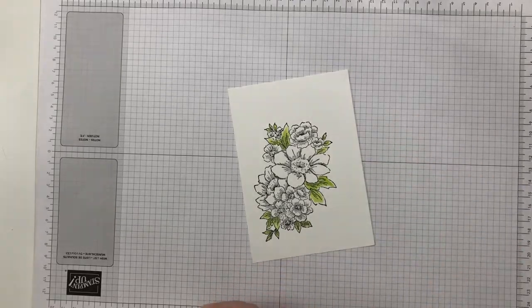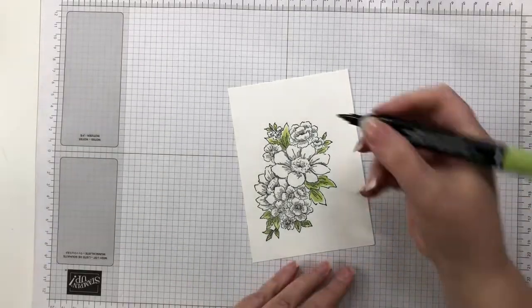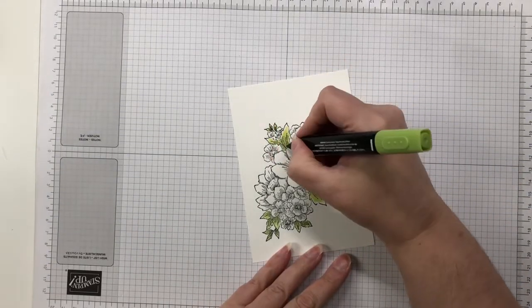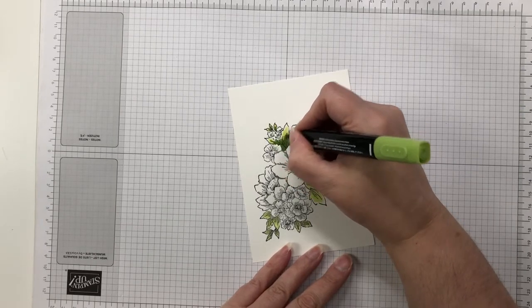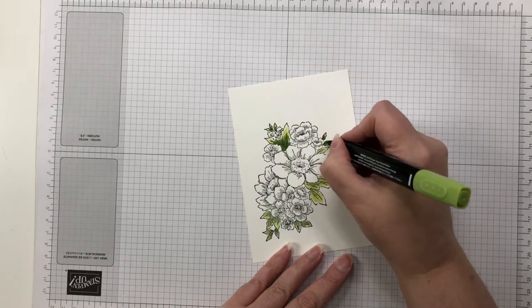Anyway I'm using my favorite color, the apple green, for the leaves. Both the light, then I come in with a little bit of the dark for the shadows, and then I go over it again with the light just to sort of blend it together.